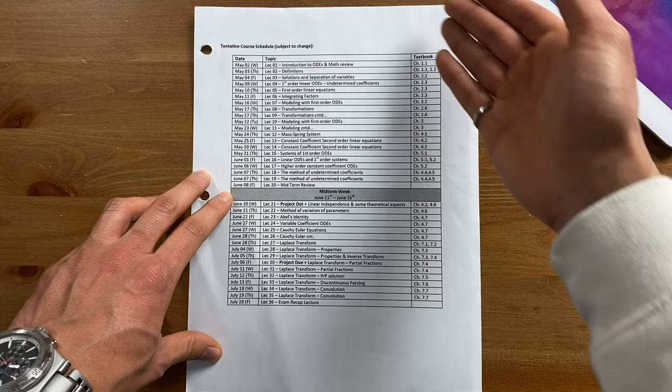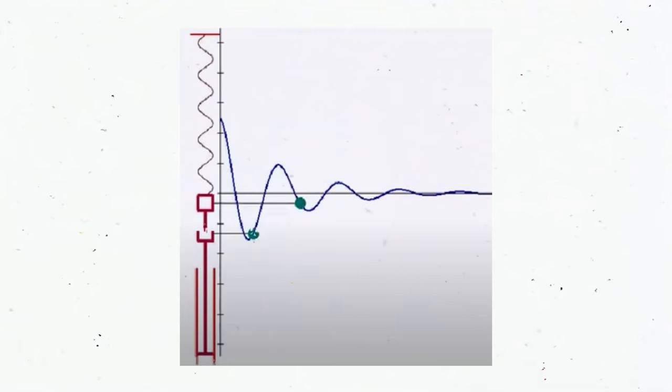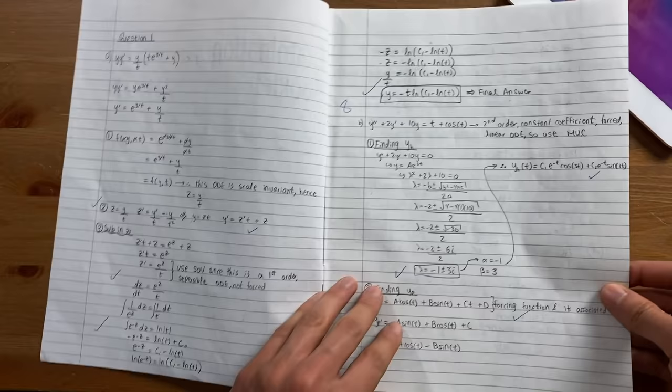Next, we take a course on differential equations, where we learn how to solve a certain type of equations. These equations are really important in engineering because they represent more complex motion, like the motion of a mass-spring system under friction. This class teaches you techniques that prove the engineering equations you will learn about in other classes.